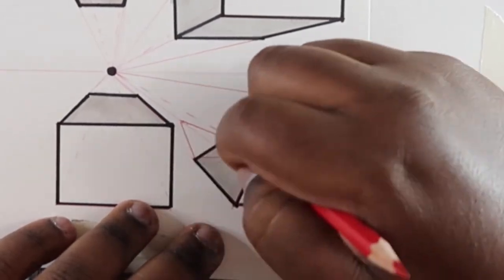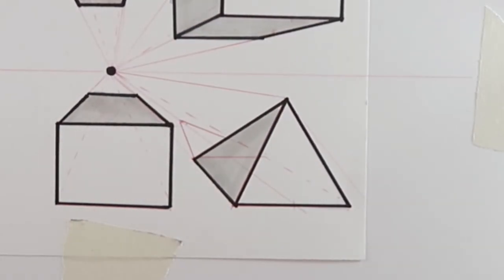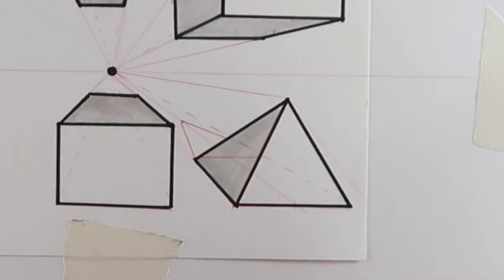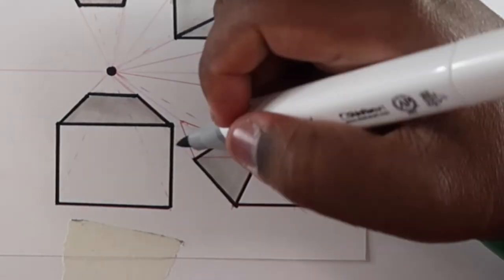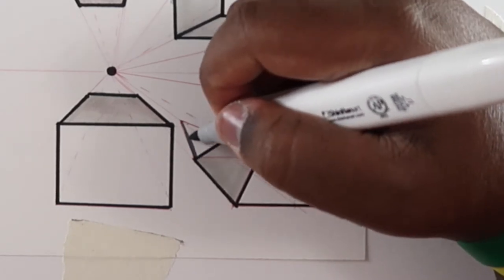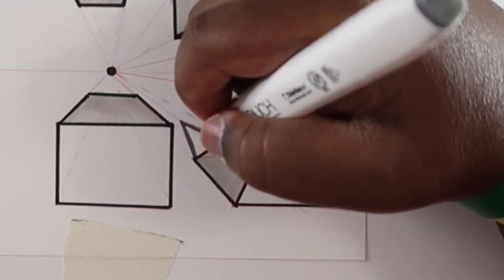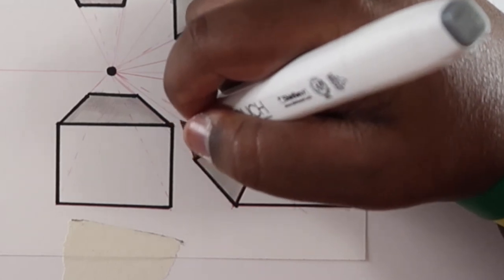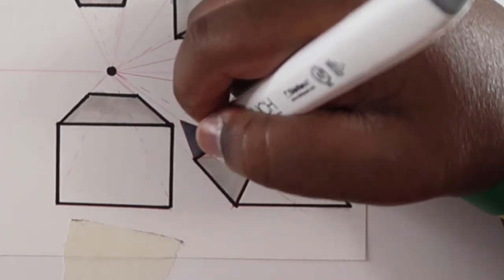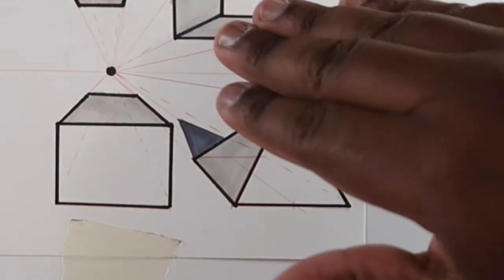And anything else we don't need in this area, we can get rid of. And I'm just going to find a darker gray to add the shadow. And there, that's our pyramid shadow.